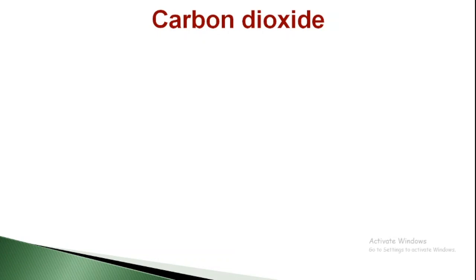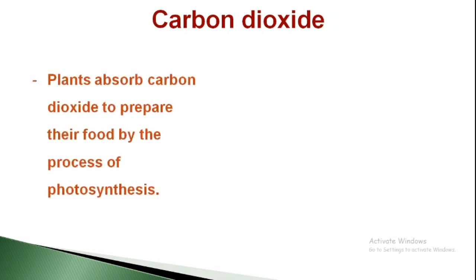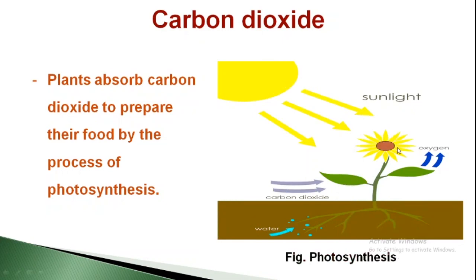Next one is carbon dioxide. Plants absorb carbon dioxide to prepare their food by the process of photosynthesis. Carbon dioxide plays a very major role in producing plant food. Without carbon dioxide, plants will not be able to prepare their food. For the process of photosynthesis, they need sunlight, carbon dioxide, and water. Plants take carbon dioxide and release oxygen. So carbon dioxide plays a major role in the preparation of food for plants.